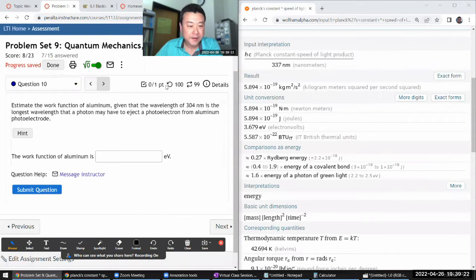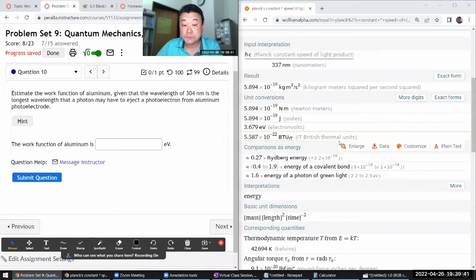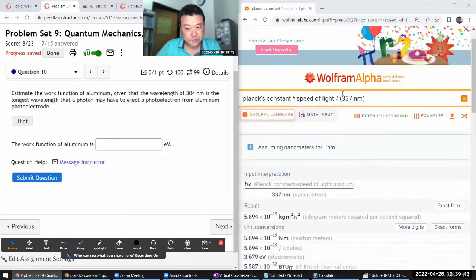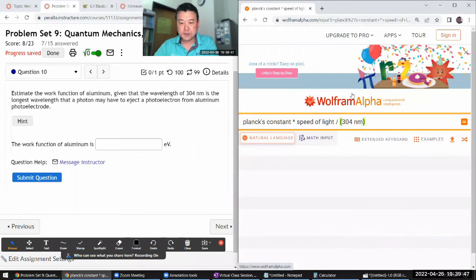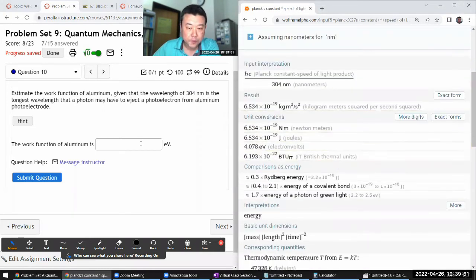Okay, question 10. This is still a photoelectric effect question. It asks, estimate the work function of aluminum, given that wavelength. Okay, so it's the exact same question as before, just with a change in what the maximum wavelength is. So I'll just use this, just change the wavelength, 408.